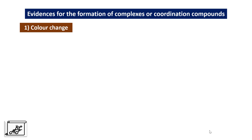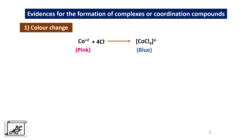The first evidence is change in color. For example, if we take any cobalt salt, generally these cobalt salts are pink in color. If we dissolve it in water, it will give a light pink color solution. To this solution, if we add HCl solution, it will give a blue color complex. This blue color complex is of CoCl4²⁻. If there is no formation of a complex, the cobalt solution would have remained pink. But the change in color from pink to blue indicates there is a formation of a coordination compound.